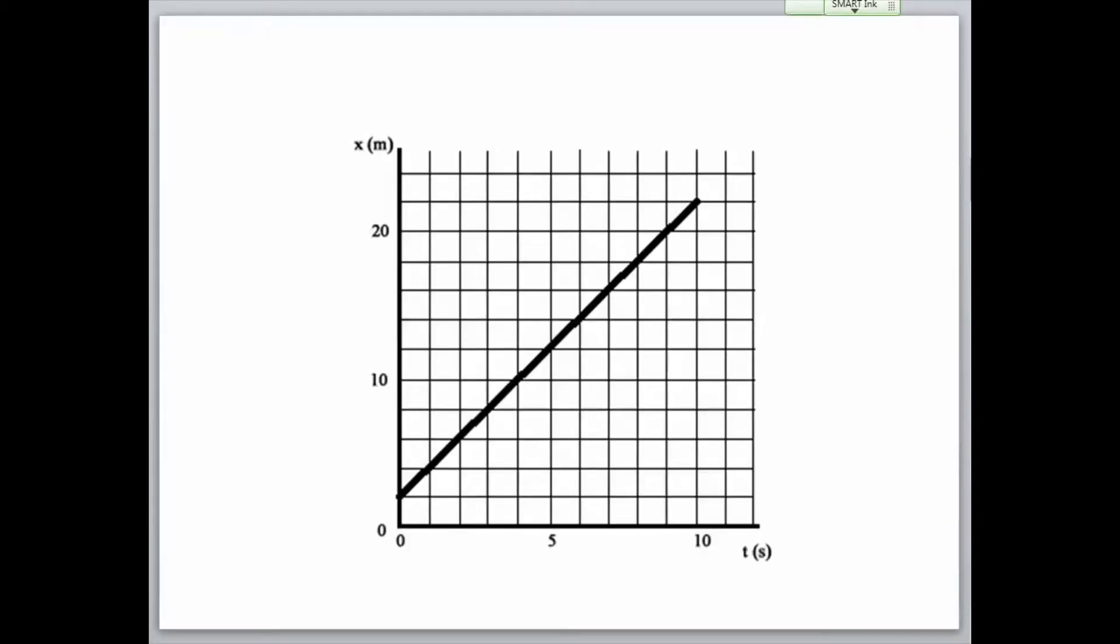If we look at a position versus time graph, it tells us the location of an object at certain points in time. For example, in this first graph, at 5 seconds the object would be found at the 12-meter position. Just know that each grid line on the vertical axis is 2 meters.